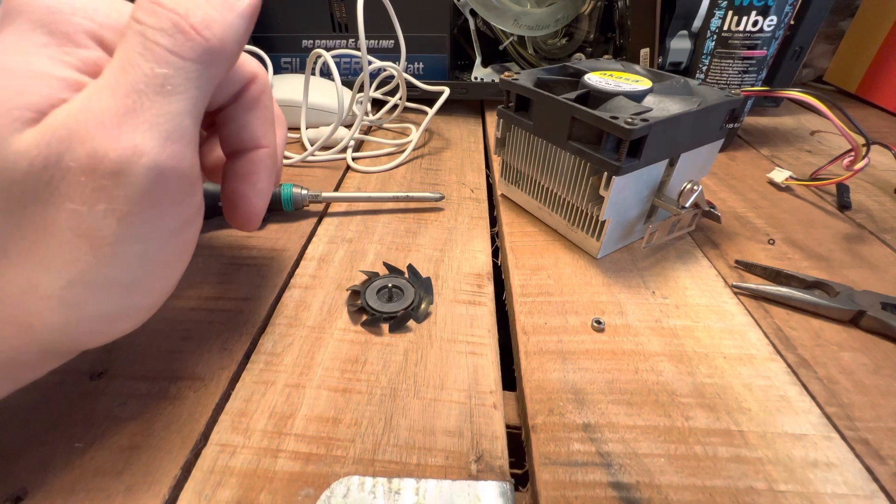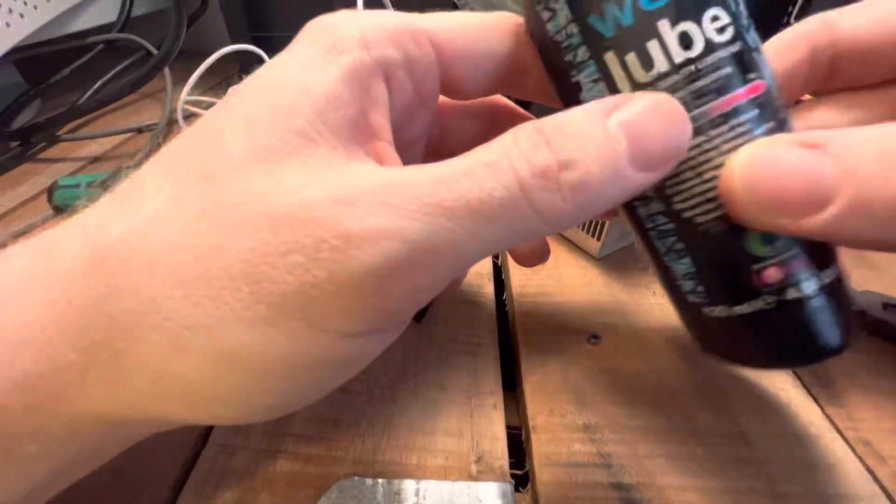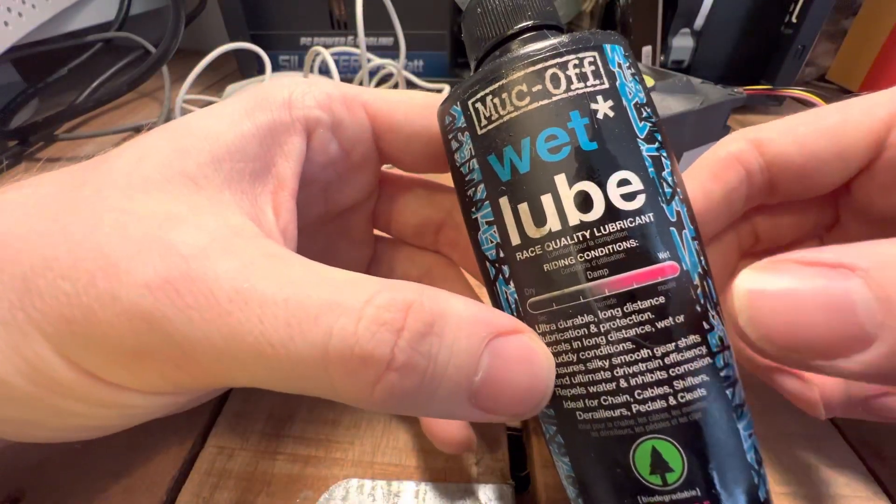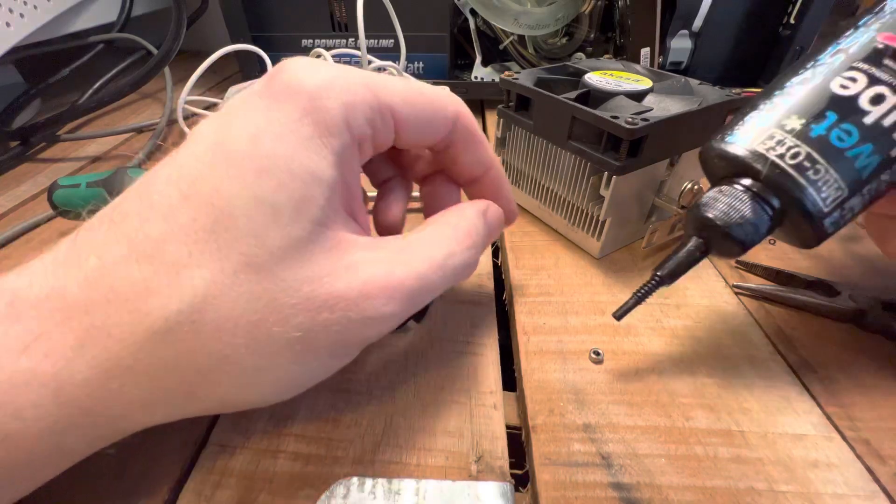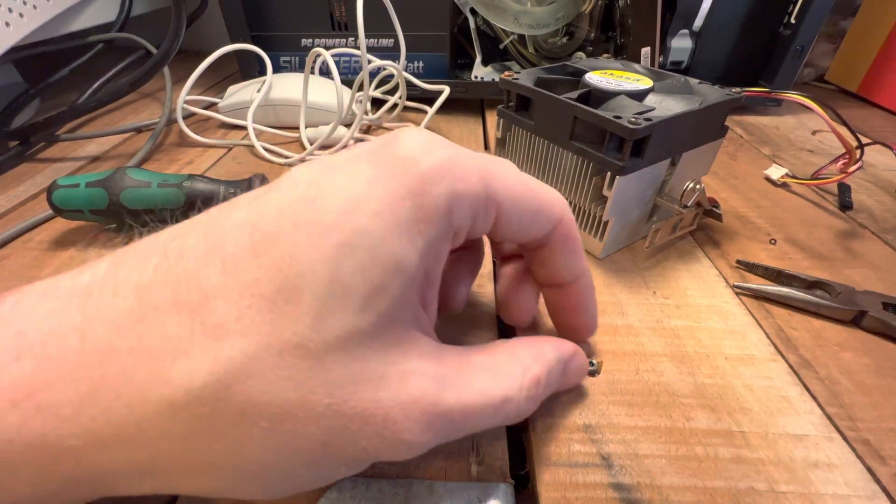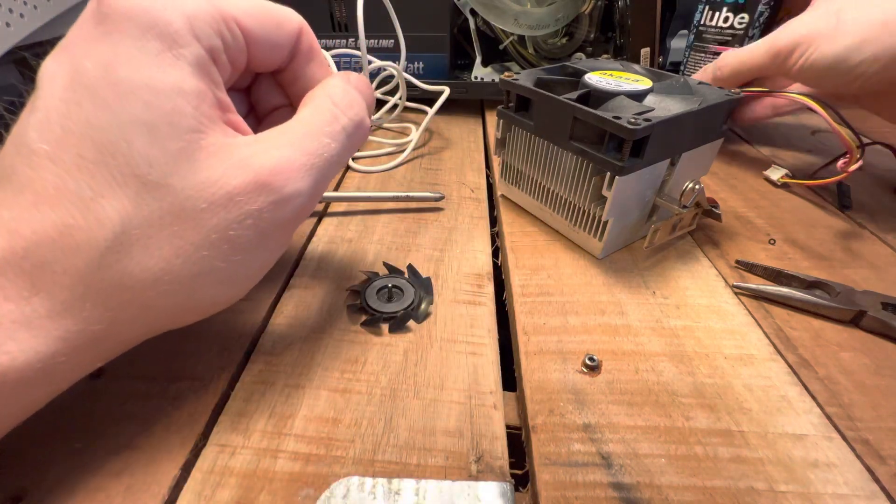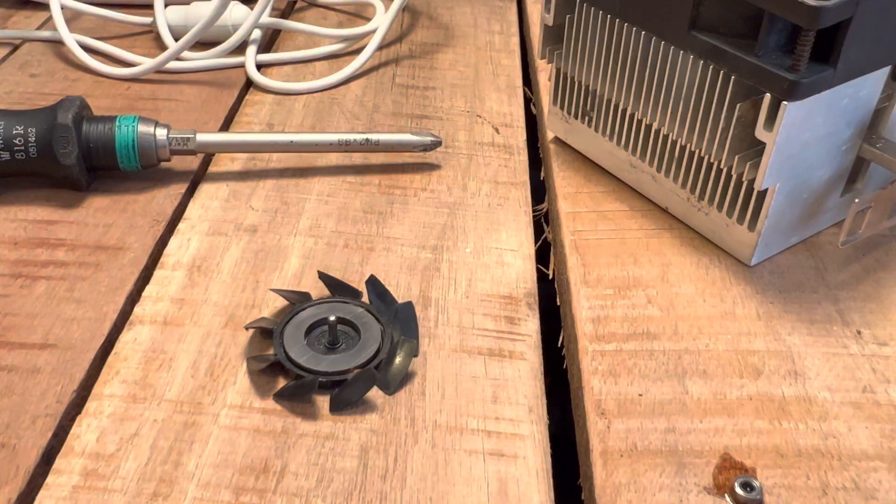What I'm going to do is I've got this bicycle chain lubricant which I use on fans sometimes, and I'll just give that a drip in there. I'll zoom you in again.